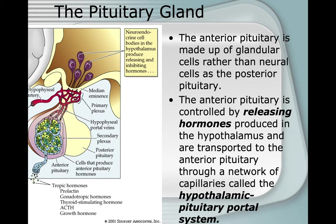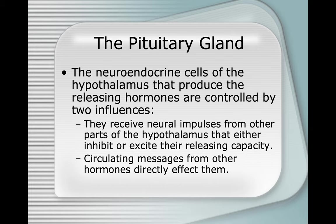The anterior pituitary is made up of glandular cells rather than neural cells. It is controlled by releasing hormones produced in the hypothalamus, transported through a network of capillaries called the hypothalamic-pituitary portal system. The neuroendocrine cells of the hypothalamus that produce releasing hormones are controlled by two influences: neural impulses from other parts of the hypothalamus, and circulating messages from other hormones.